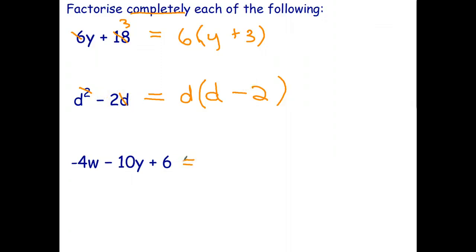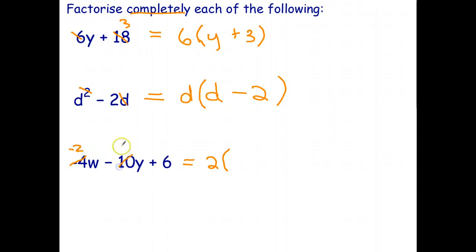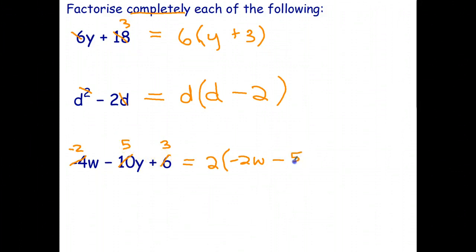For the last one, −4w−10y+6: taking out a common factor of positive 2 gives 2(−2w−5y+3).